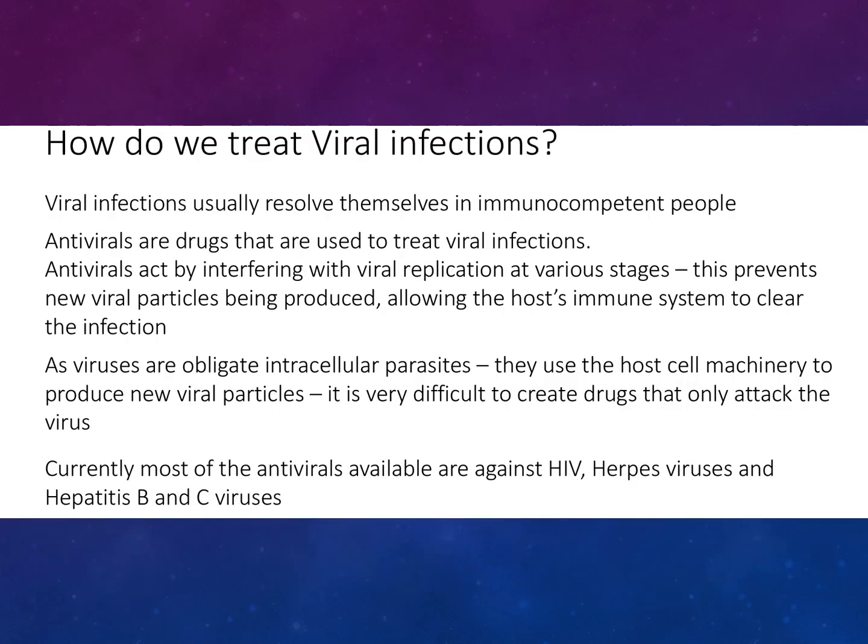So how do we treat viral infections? Viral infections usually resolve themselves in immunocompetent people — meaning your immune system is able to fight off infections. If not, that means you have an immunocompromised system. Antivirals are drugs used to treat viral infections; they act by interfering with viral replication at various stages. This prevents new viral particles being produced, allowing the host's immune system to clear the infection. As viruses are obligate intracellular parasites, they use the host cell machinery to produce new viral particles.